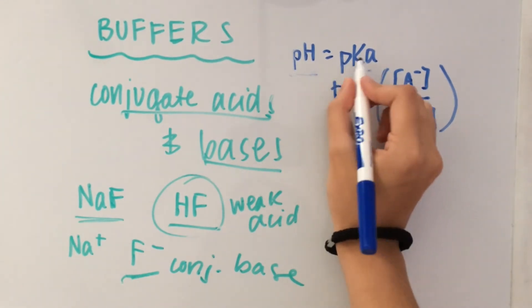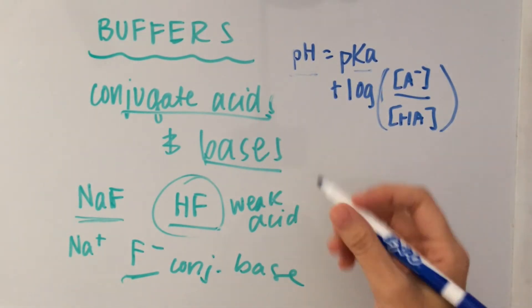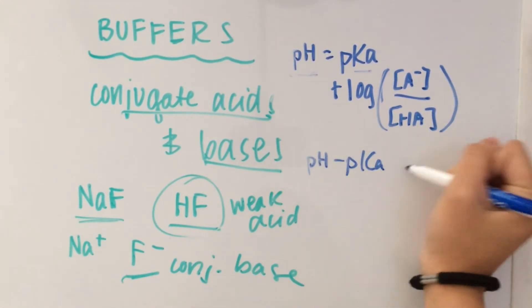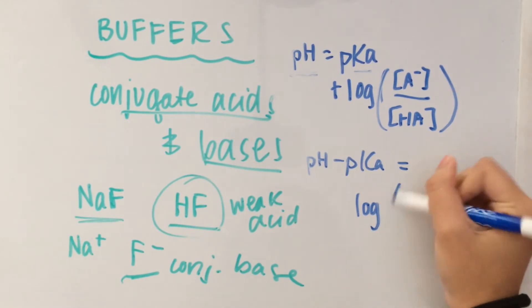And then you would subtract pKa from both sides of the equation. So you get pH minus pKa equals the log of concentration of the acid.